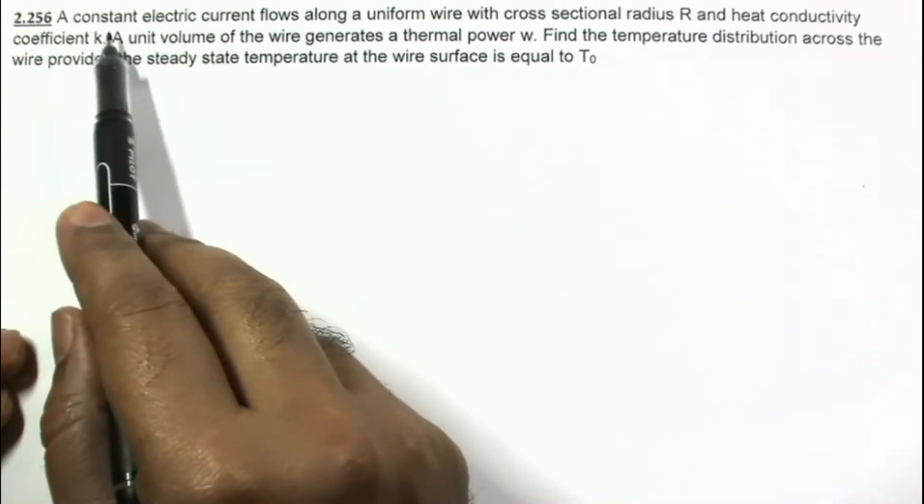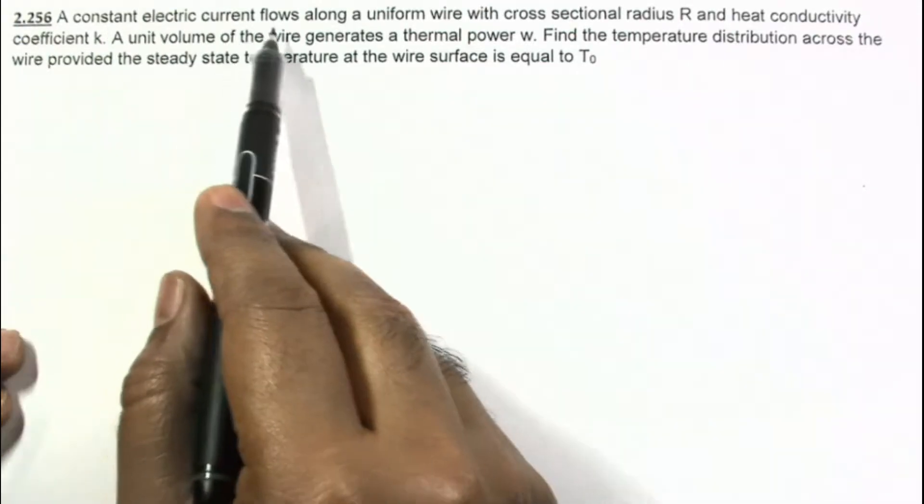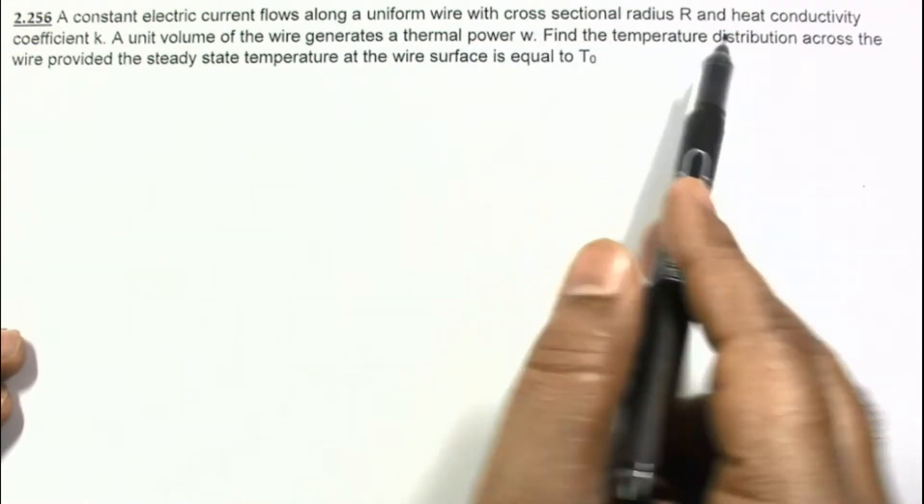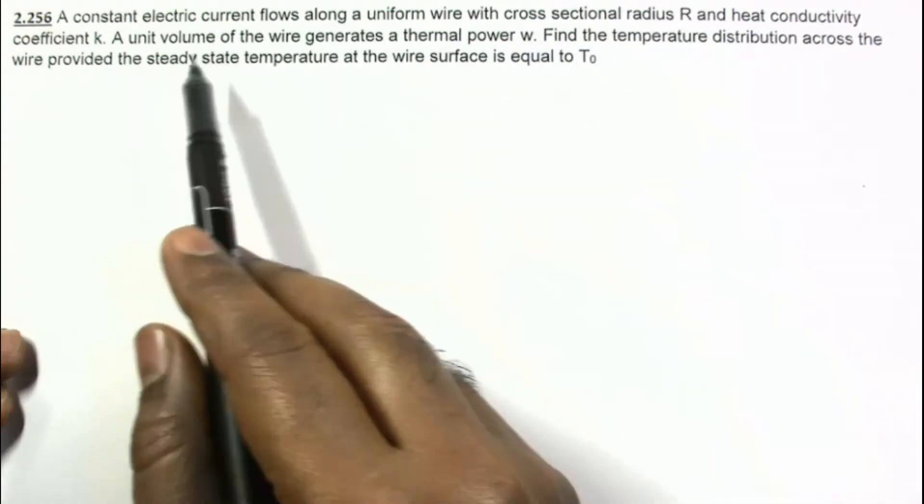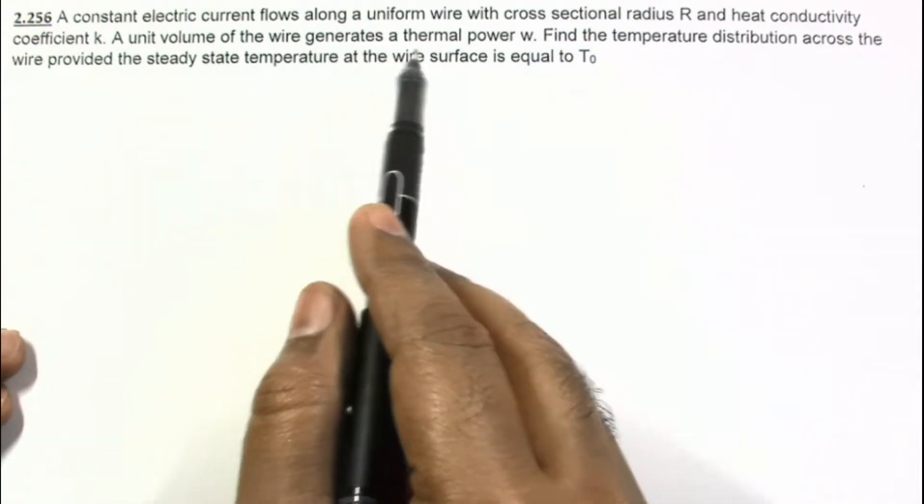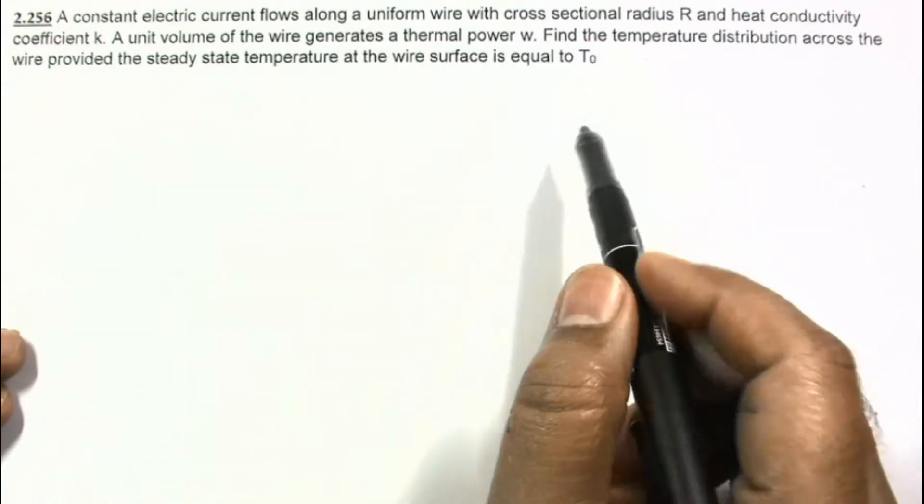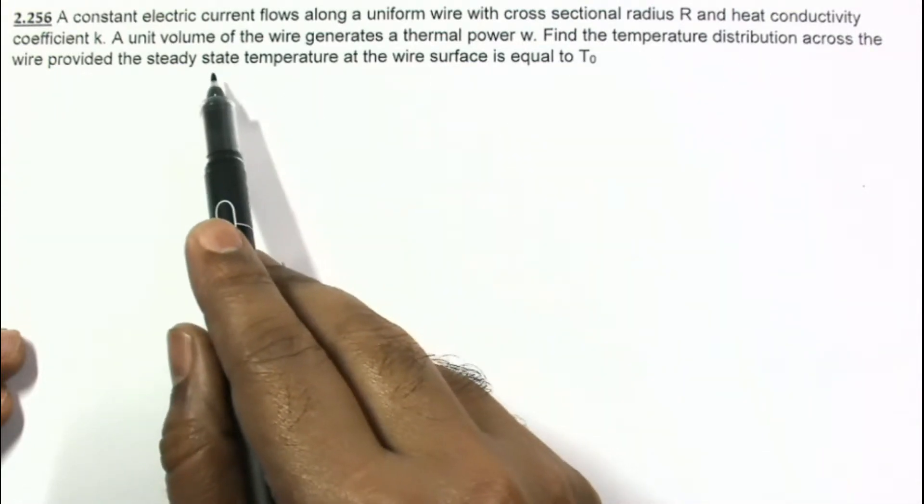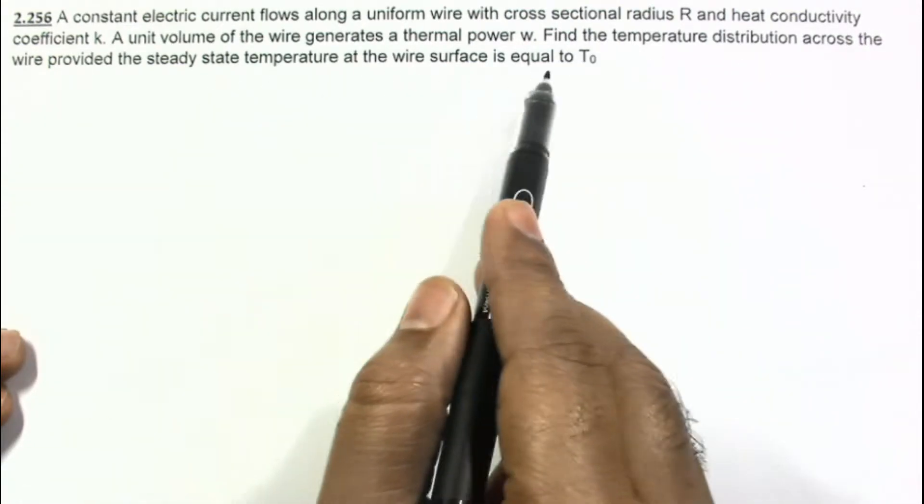Question number 2.256. A constant electric current flows along a uniform wire with cross sectional radius R and heat conductivity coefficient K. A unit volume of the wire generates a thermal power W. Find the temperature distribution across the wire provided the steady state temperature at the wire surface is equal to T₀.